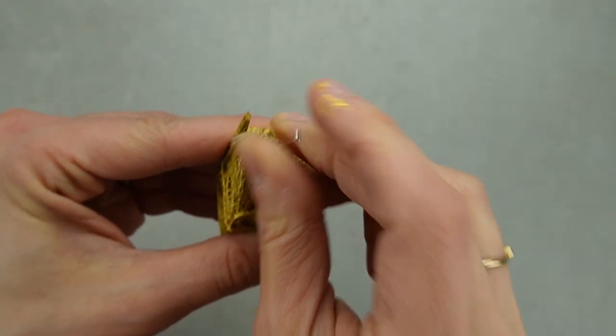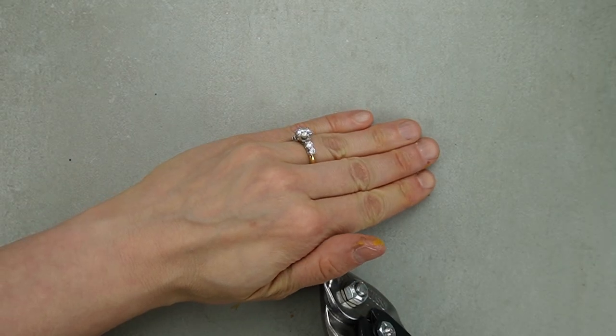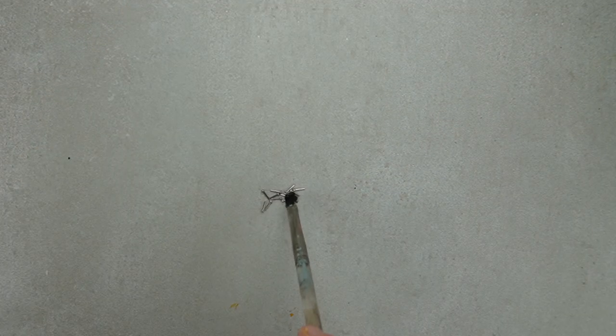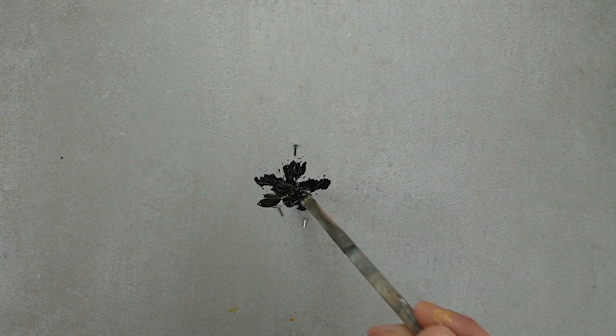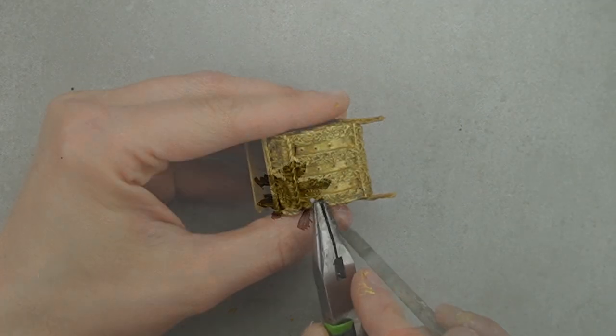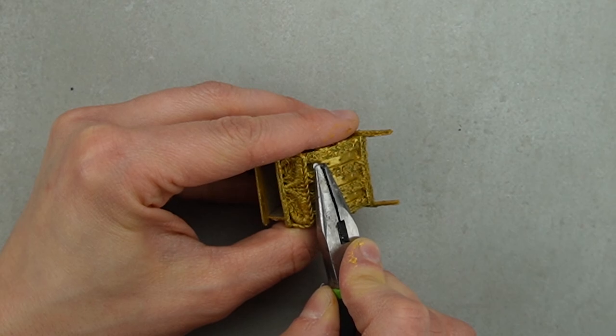I'm using some sewing pins to create rows of buttons. I cut 12 in total and I'm covering them with a mixture of black paint and white glue. I used a little bit of white glue to push them into the holes I made.